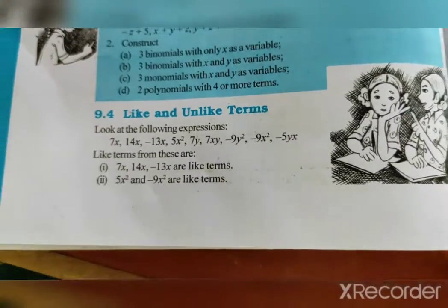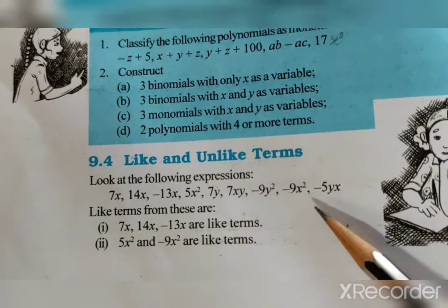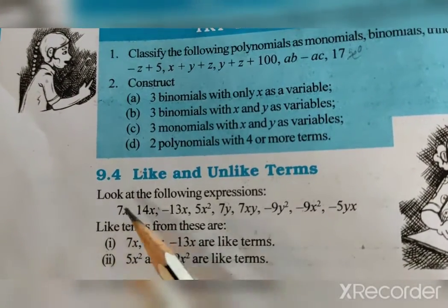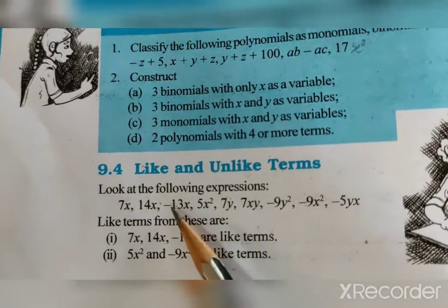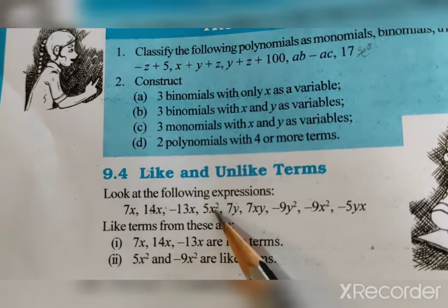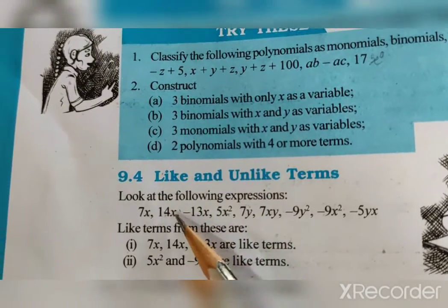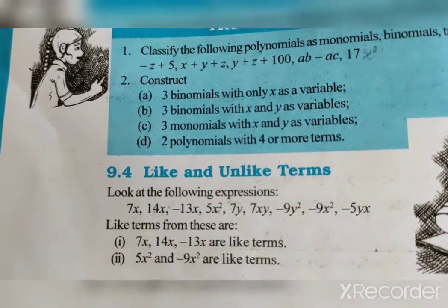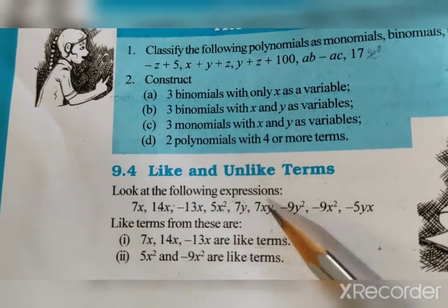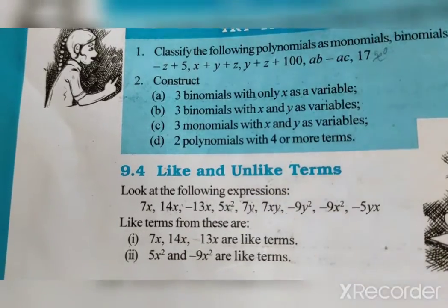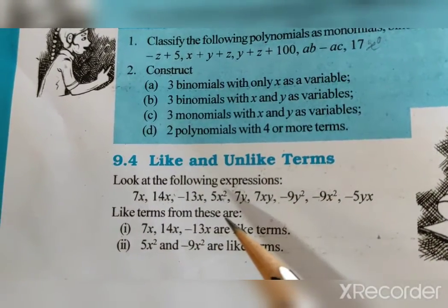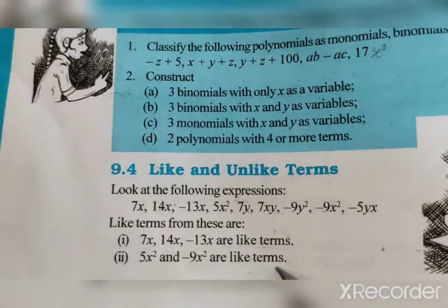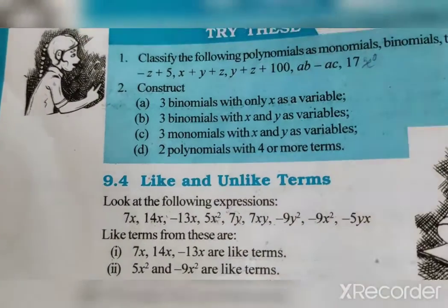Now, like and unlike terms. In like terms, coefficients may be different but the variable should be the same. For example, x and x — coefficients are different but they are like terms. But 14x and 5x squared are NOT like terms because although coefficients may differ, the exponents of the variables are different. Like terms from a list: 7x and 14x are like terms; 5x squared and minus 9x squared are like terms.